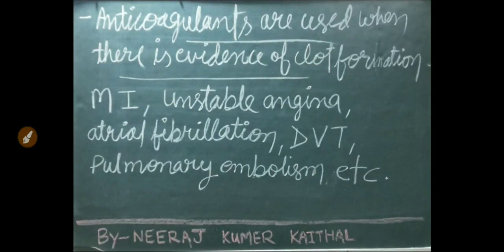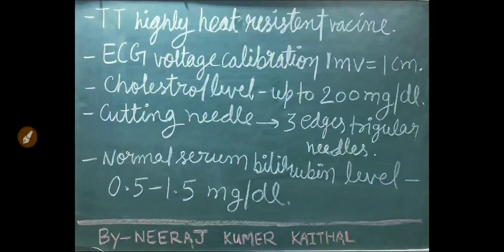Anticoagulant drugs are used when there is evidence of clot formation. Situations where anticoagulants may be used include myocardial infarction, unstable angina, atrial fibrillation, deep vein thrombosis, and pulmonary embolism. Tetanus toxoid vaccine is a highly heat-resistant vaccine.